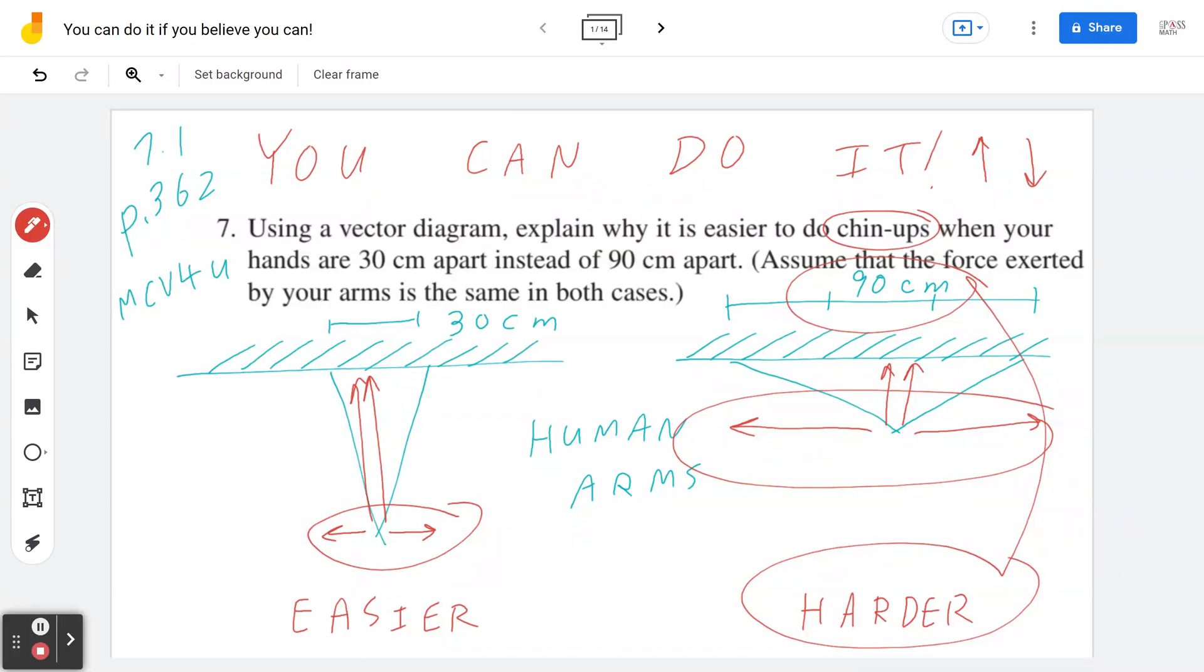Now in terms of the vertical component, again notice in the 30 centimeter case, this is longer or more than the second case which is 90 centimeters. In summary, in the first case, because the vertical components are longer, it takes less strength to do a chin-up, whereas in the second case, because the vertical component is relatively shorter, shorter than the first case, there's a lot more force that you need to overcome gravity.